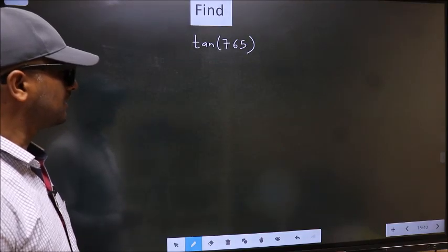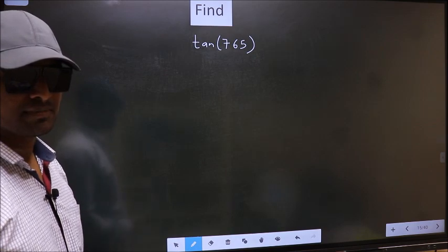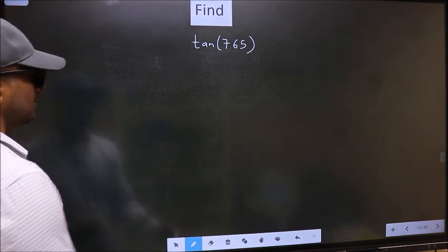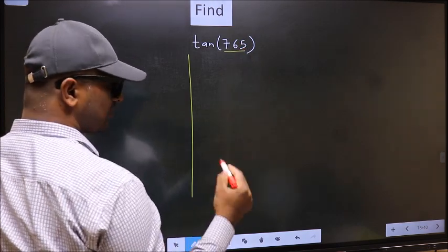Find tan(765°). To find this, we should follow this method. See, here we have 765. Now you should check: 765 lies between which two multiples of 180?